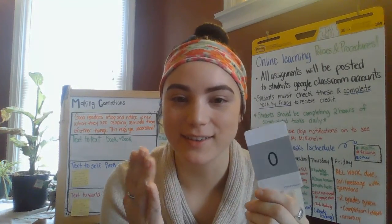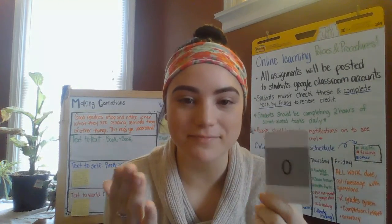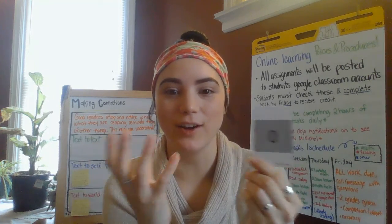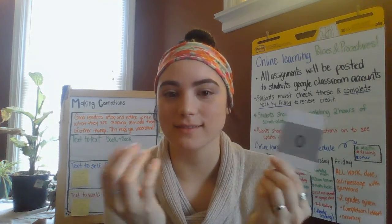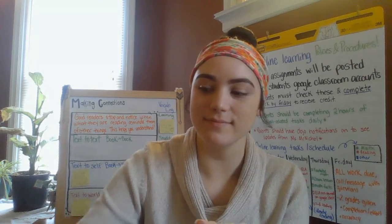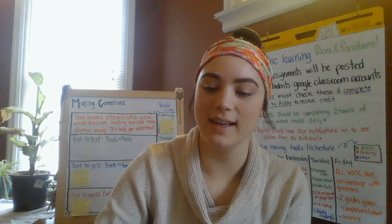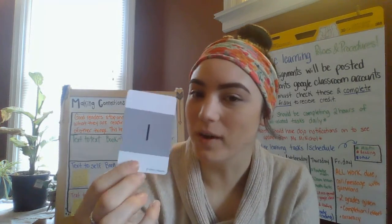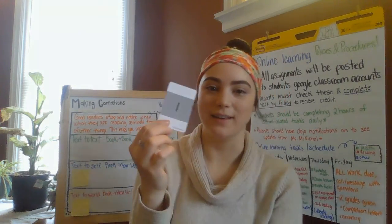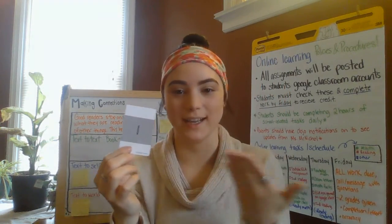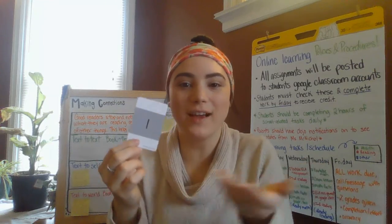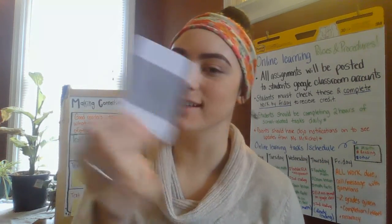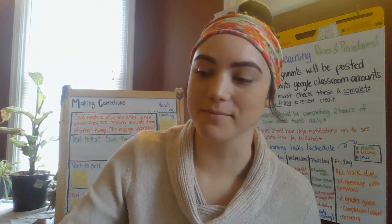Anything times zero is zero. If you don't have it, it doesn't exist. You don't have anything — zero. Anything times one is itself. If you have it one time, all you have is that. You have it once. Anything times one is that other number.